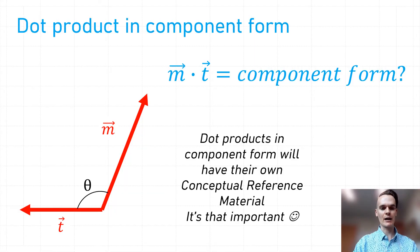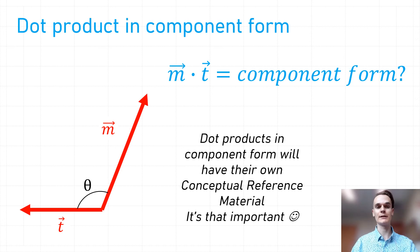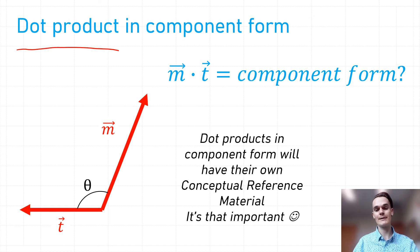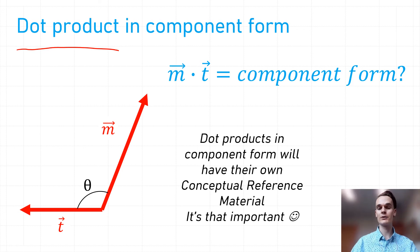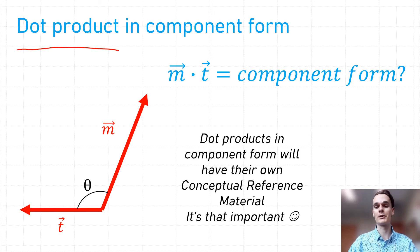Another vector operation we've learned that we can absolutely do in vector component form is the dot product. However, because the dot product is so important, we're going to dedicate an entire session just to doing the dot product in vector component form — later in this module. For now, we're going to concentrate on other basic operations in component form.